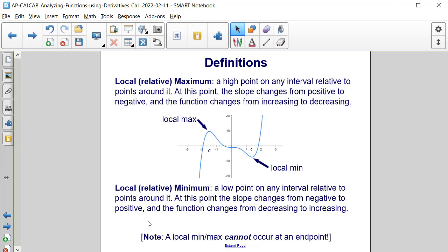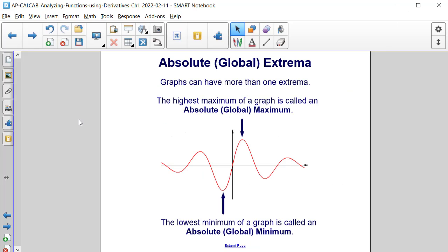It's also worth noting that a local minimum or maximum cannot occur at an endpoint. The highest maximum of a graph is called an absolute or global maximum value.